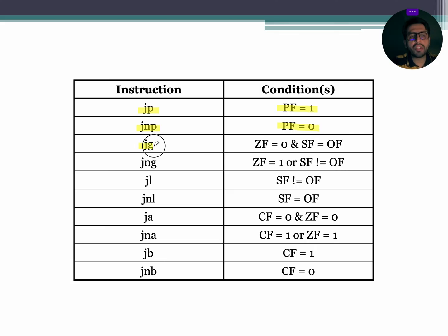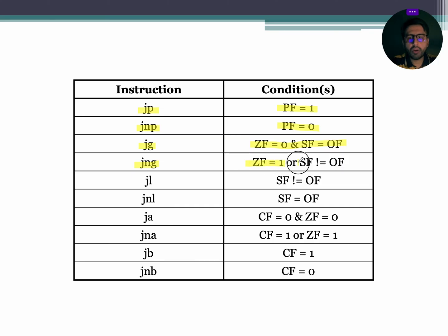Next is JG, which stands for jump if greater. For JG, the condition is zero flag equals 0 along with sign flag equal to overflow flag. Next is JNG, which stands for jump if not greater; the condition is either zero flag equals 1 or sign flag not equal to overflow flag. Next is JL, which stands for jump if less; the condition is sign flag must not be equal to overflow flag. JNL stands for jump if not less; the condition is sign flag equals overflow flag.